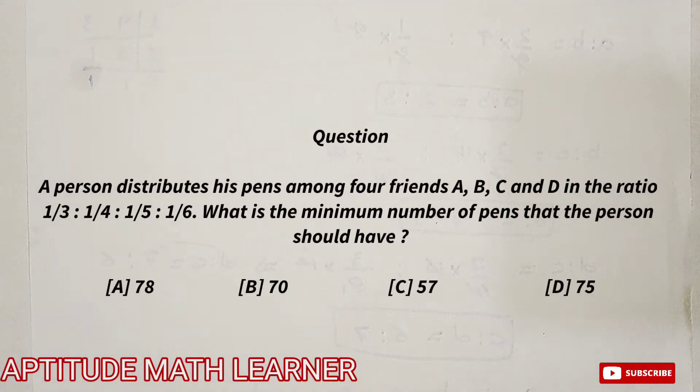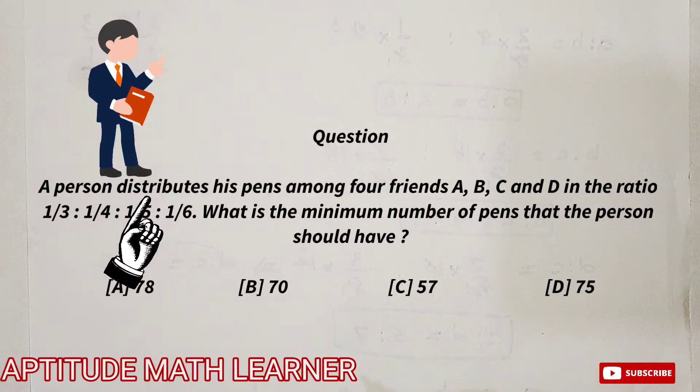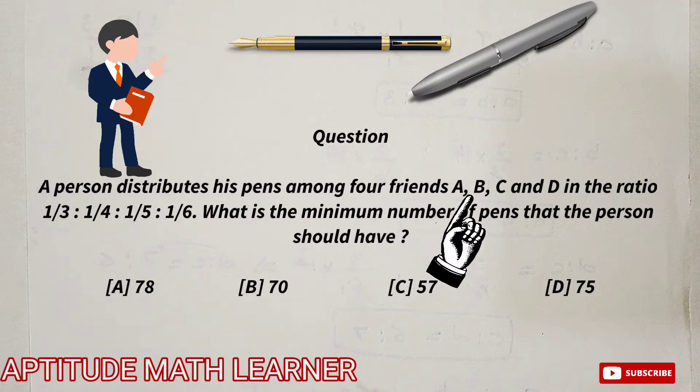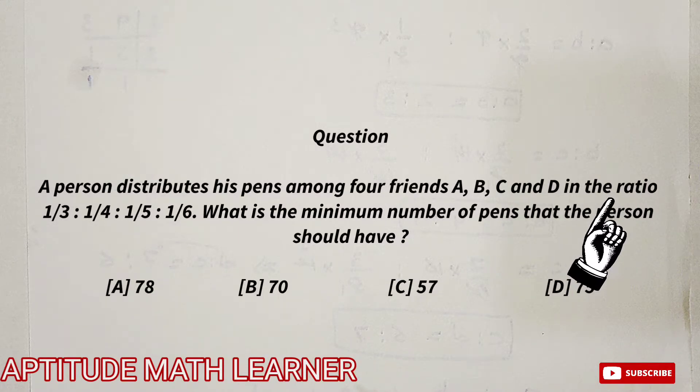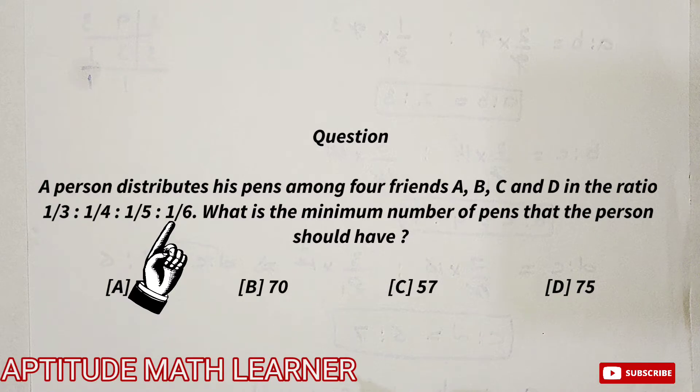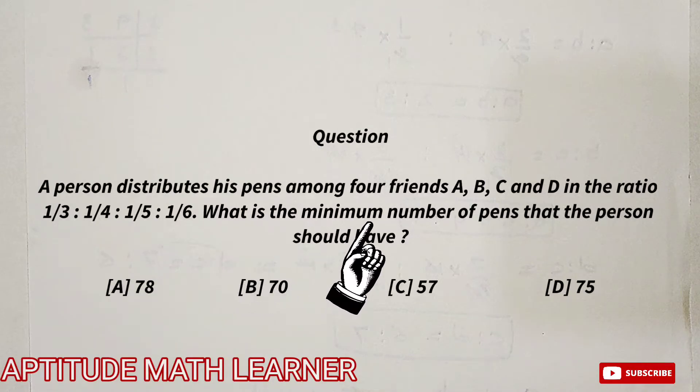Welcome friends to my YouTube channel Aptitude Math Learner with a new interesting question. Today's question is: a person distributes his pens among friends A, B, C, and D in the ratio 1/3 : 1/4 : 1/5 : 1/6. What is the minimum number of pens that the person should have?